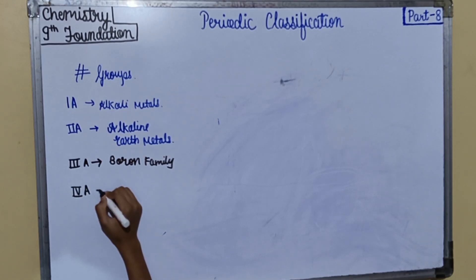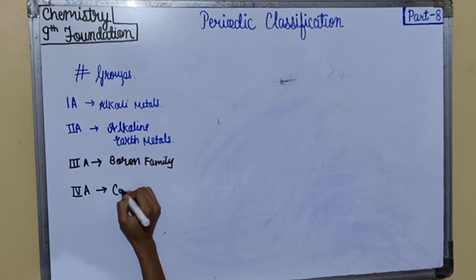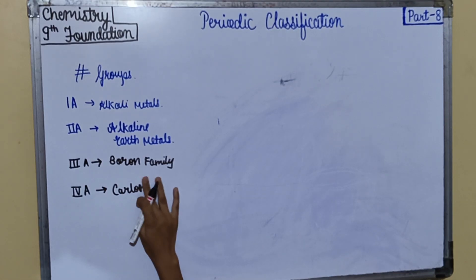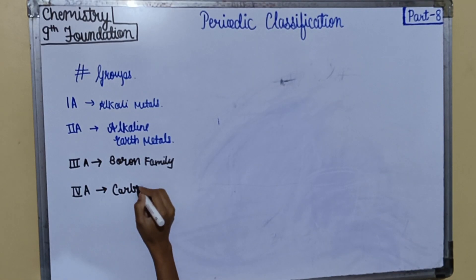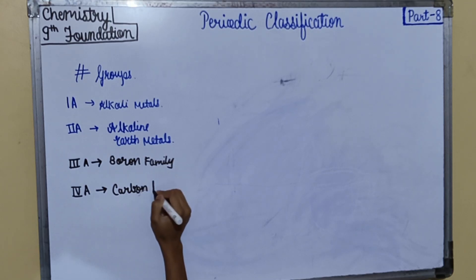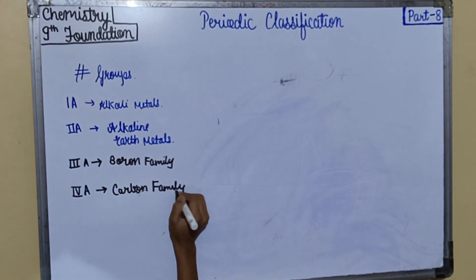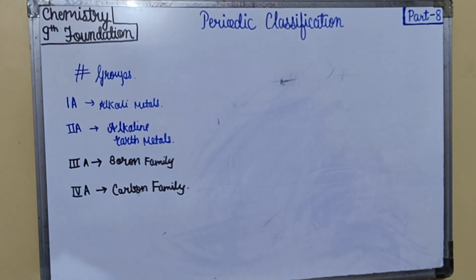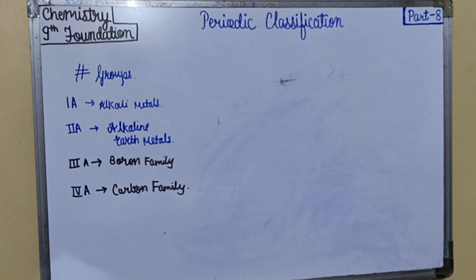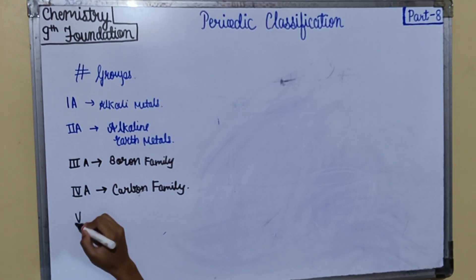Fourth A group is the carbon family. All the elements in this group have similar properties, carbon being the first element of this group. This group is called the carbon group.